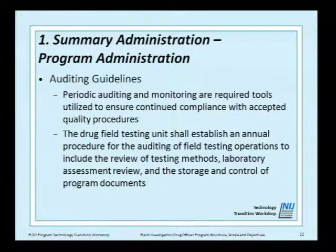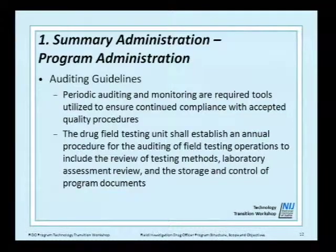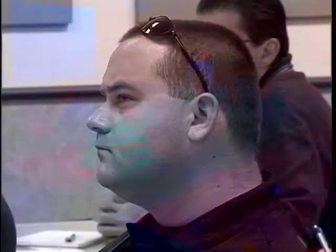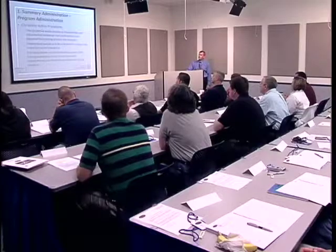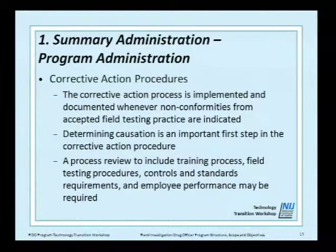Regarding auditing guidelines — these are recommended. Periodic auditing and monitoring are required tools to ensure continued compliance with quality procedures. The drug field testing unit should establish an annual procedure for auditing field test operations, including review of testing methods, laboratory assessment review, and storage control of all program documents — basically accreditation-type language. A corrective action process is implemented and documented whenever nonconformities from accepted field testing practices are indicated. Causation is the first step, and there should always be a process review covering training processes, field testing procedures, controls and standard requirements, and employee performance.